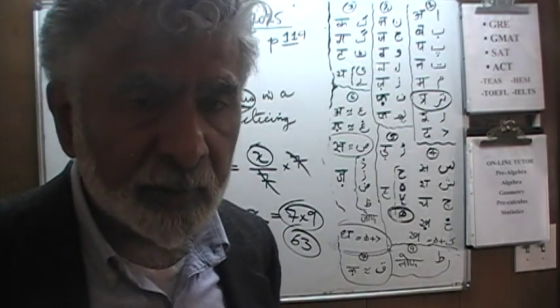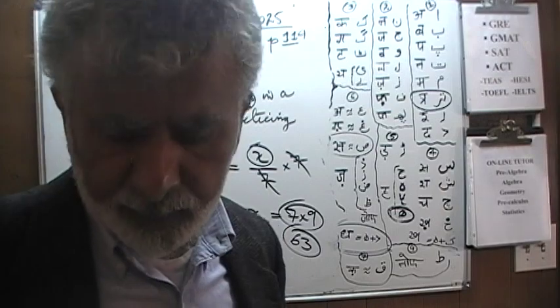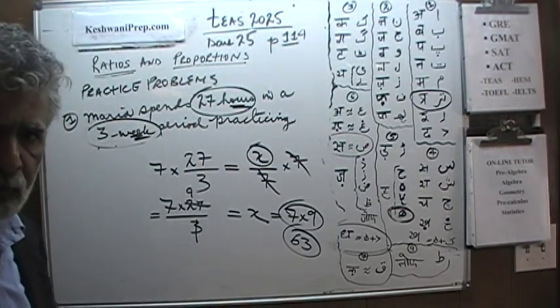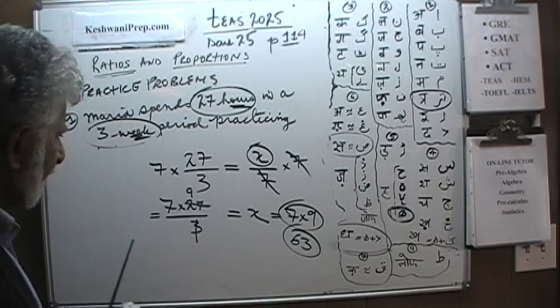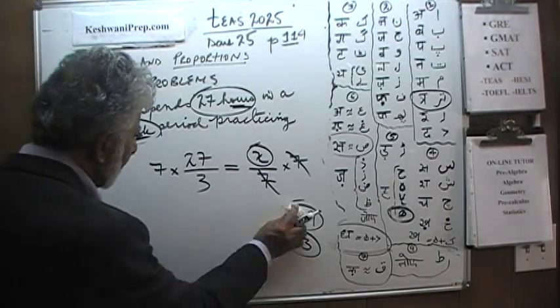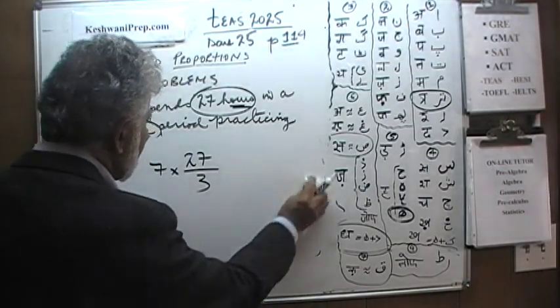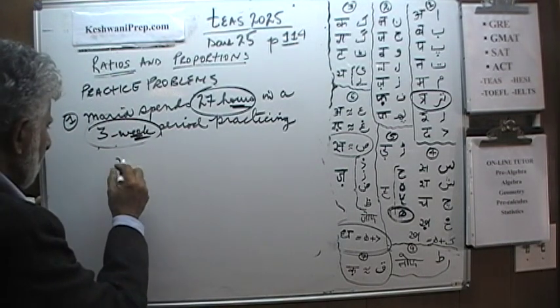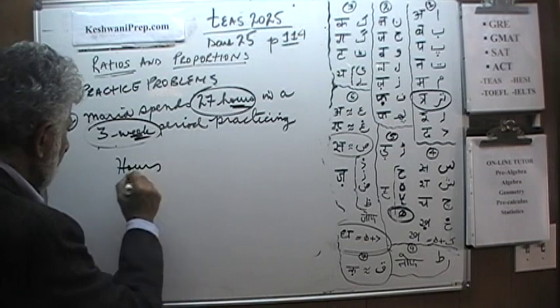This is one way of doing it, but there was one very straightforward way here. We didn't have to convert this into a mumbo-jumbo thing here. Let's do it in a more straightforward way. We went in a very roundabout way. Here's what we are dealing with: hours and weeks.